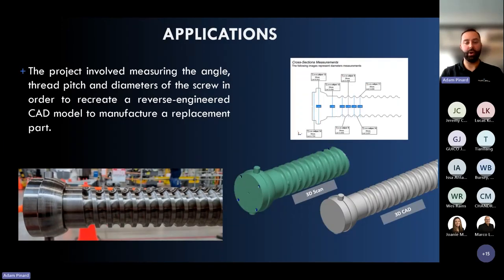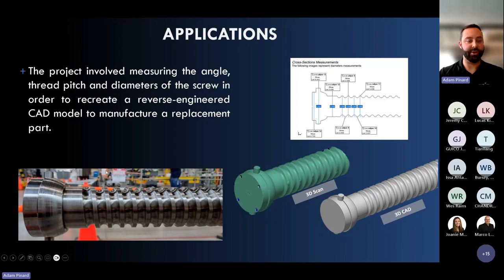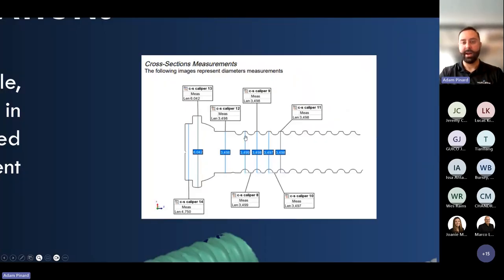A first application: measuring the angle, thread, pitch, and diameters of a screw in order to recreate a reverse-engineered CAD model. Reverse engineering is the method of analyzing an existing part and then reproducing or redesigning it for improvement or manufacturing. We used 3D scanning — which allows cross-section views and direct measurement extraction — and then redesigned the CAD model. We could also have achieved this for simpler parts just by measuring diameter and angle in a CAD software such as SolidWorks.